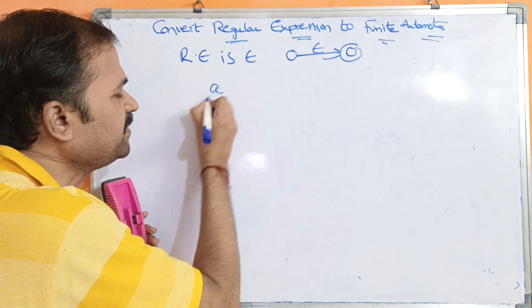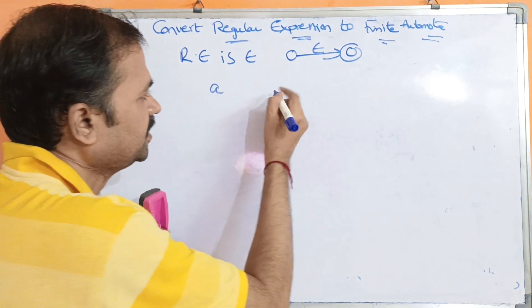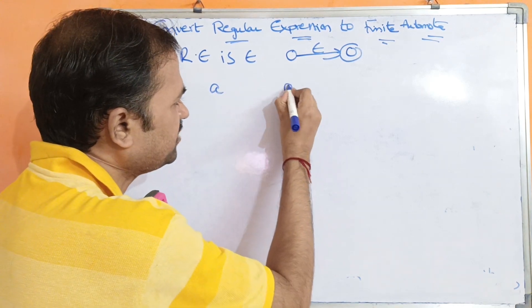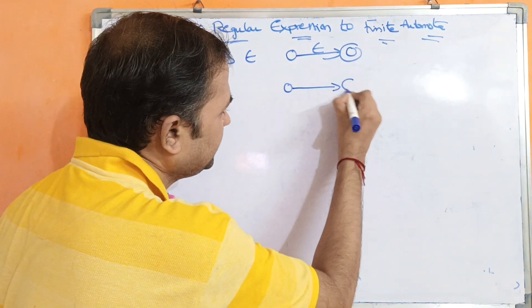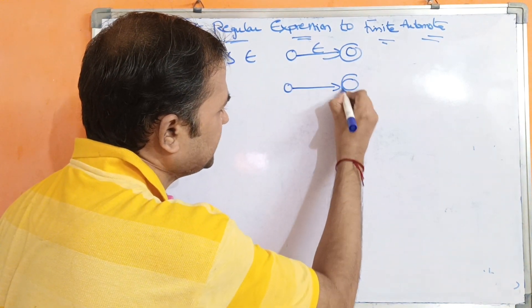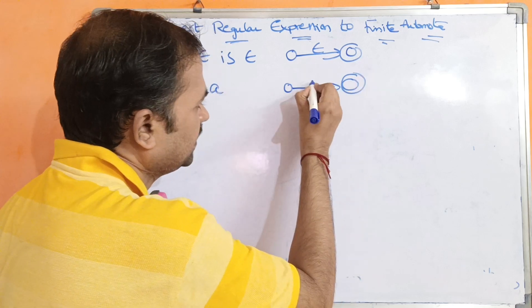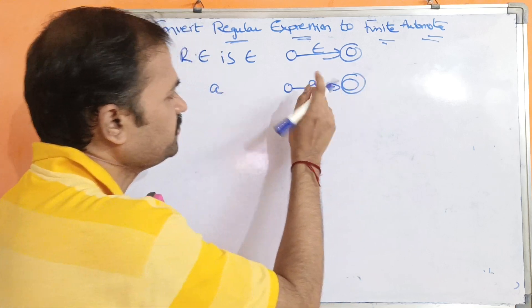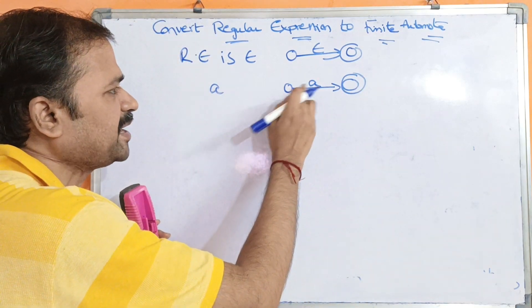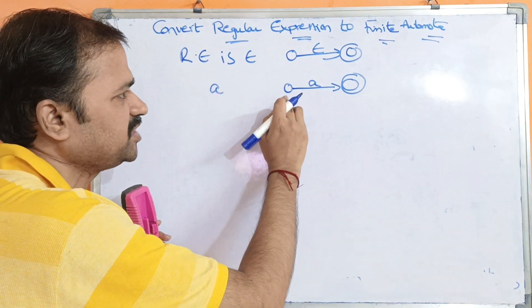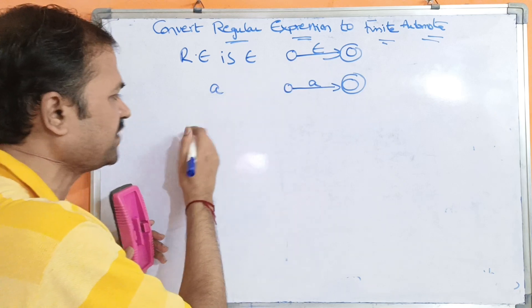If the input symbol is A, we also require two states. Let one be the final state. The input symbol is A, so on applying A on the initial state, we will move to the final state.